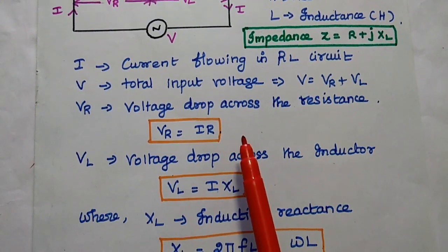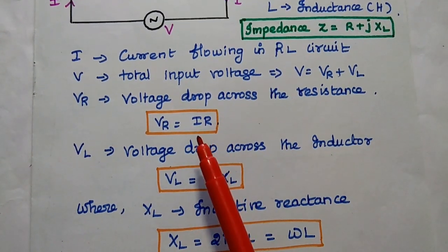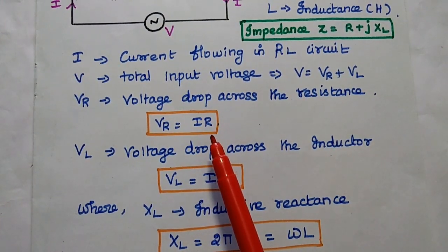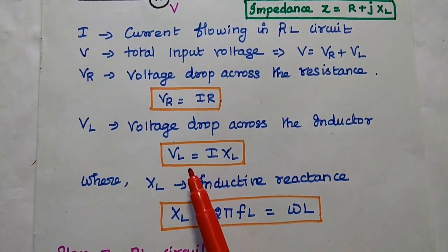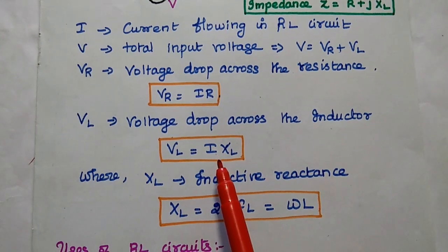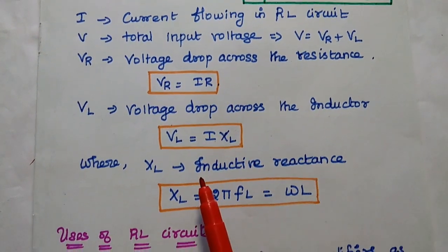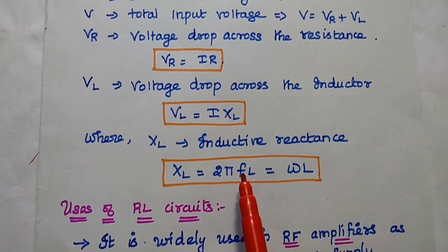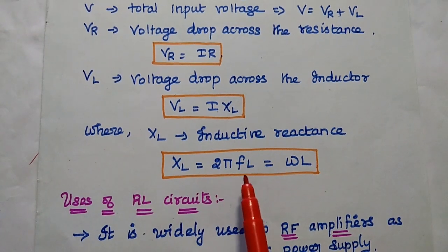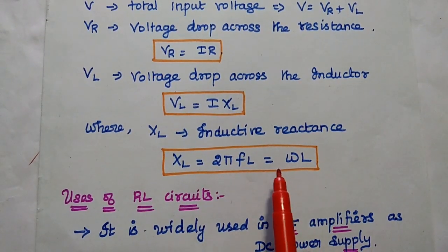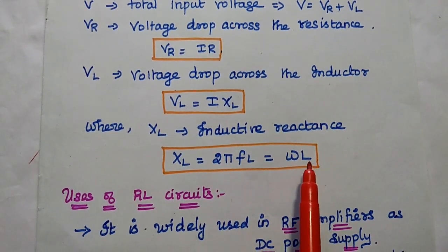VR is the voltage drop across the resistance. According to Ohm's law, VR equals I multiplied by R. The voltage drop across the inductor is VL, which equals I multiplied by XL. XL is the inductive reactance, and its value is 2πF multiplied by L. Since 2πF is the angular frequency omega, we can say the inductive reactance is ωL.